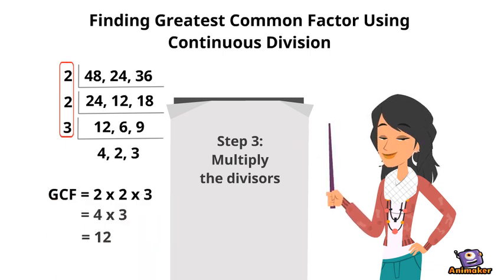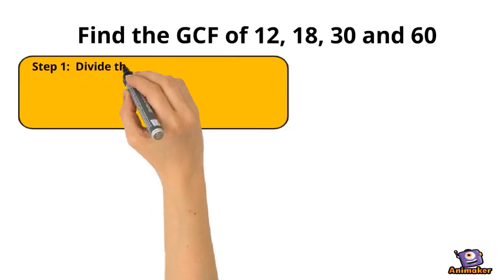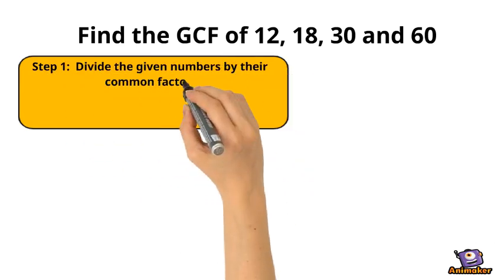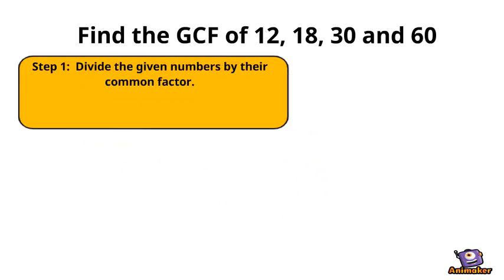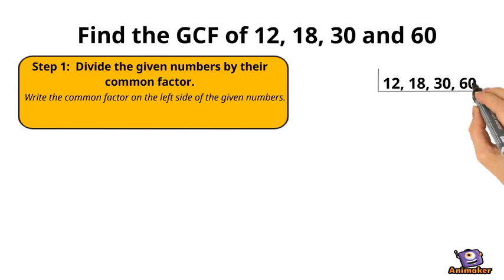Let's find the GCF of 12, 18, 30, and 60. Step 1: Divide the given numbers by their common factor. Write the common factor on the left side of the given numbers and the quotients below the numbers.